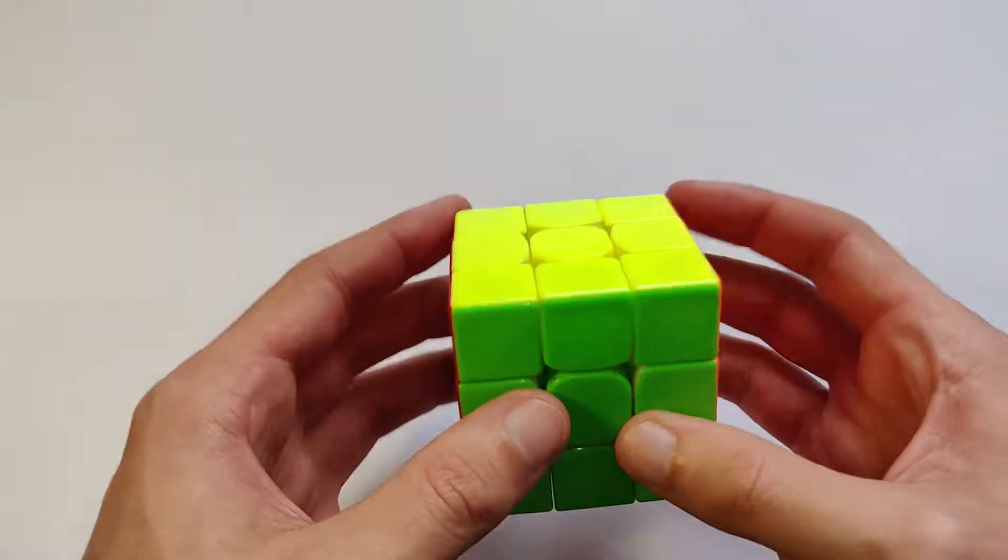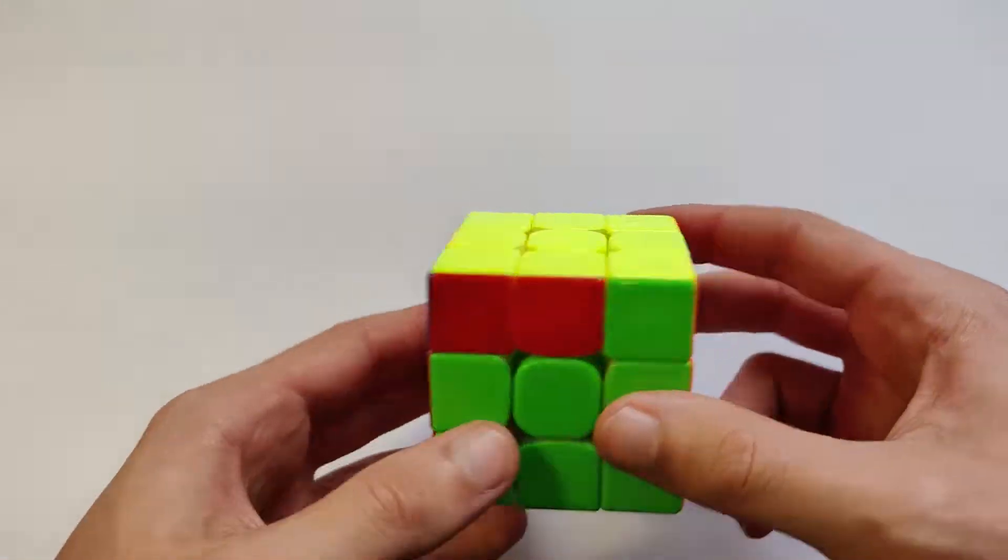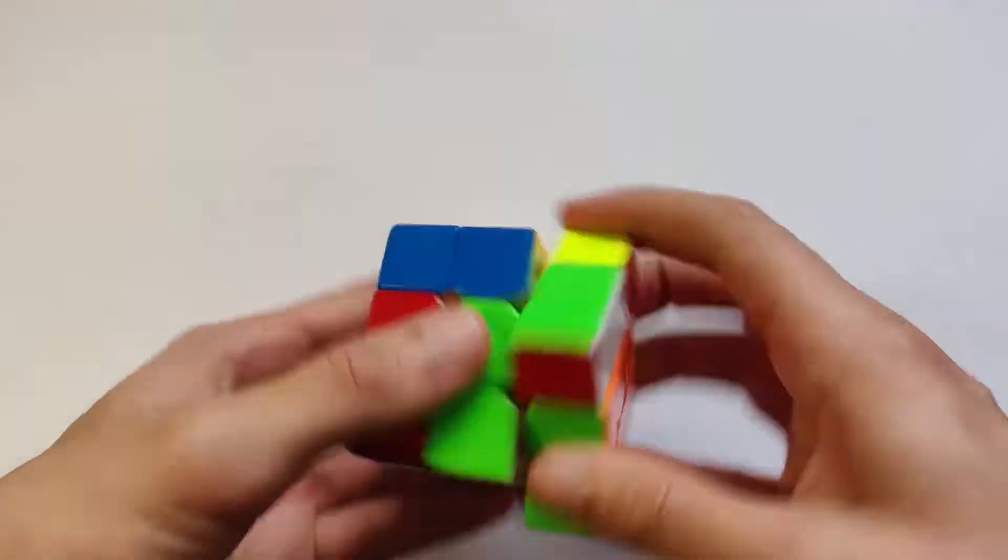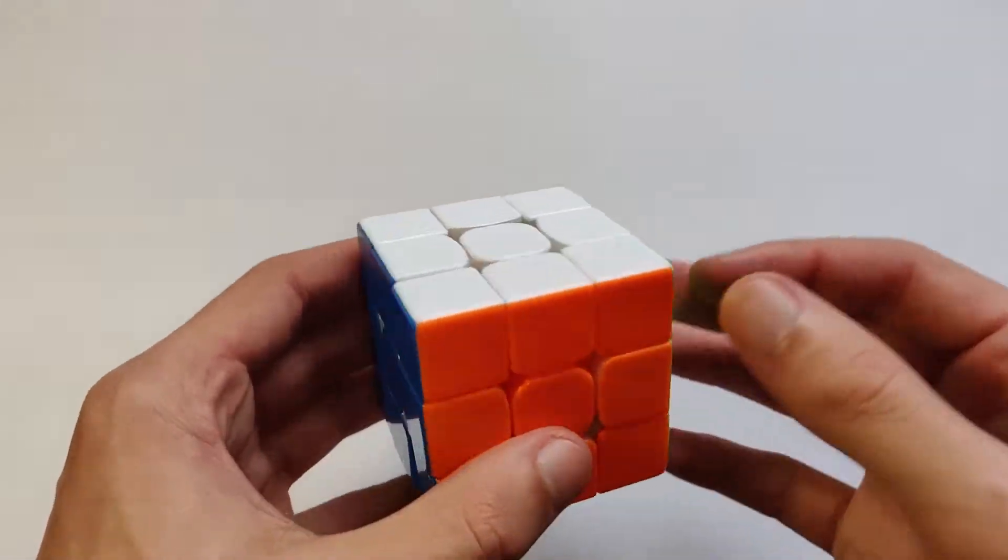G'day guys, welcome back to another video. You requested that I do the opposite G perm. We did that one last time. Now people want to do A and C. It's real simple, not the same algorithm. It's real simple to learn, so let's get started.